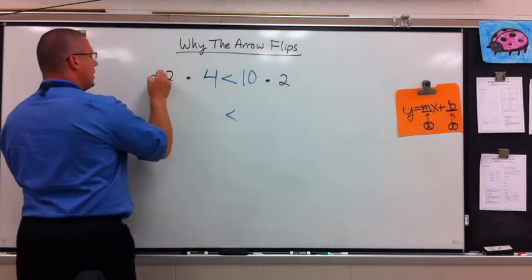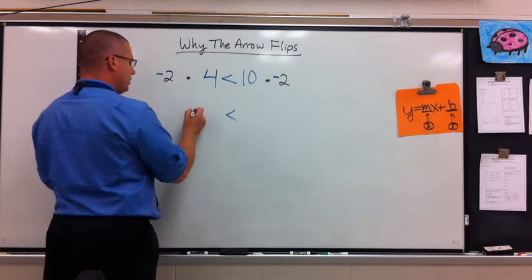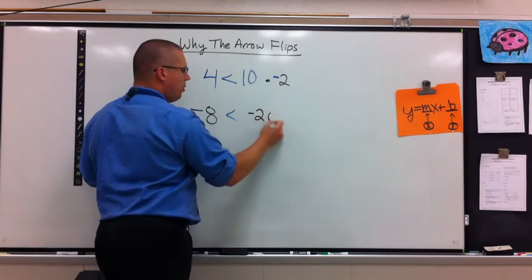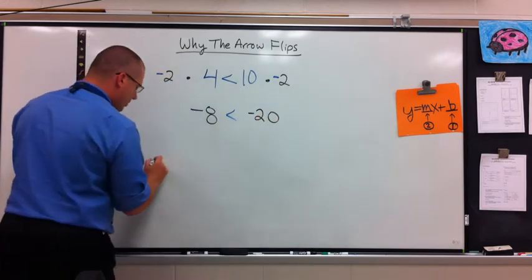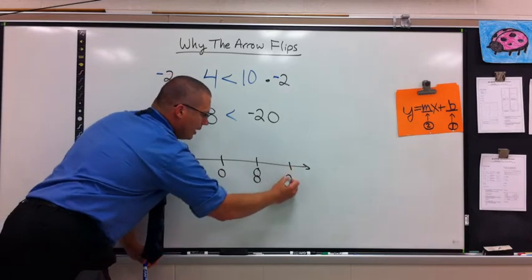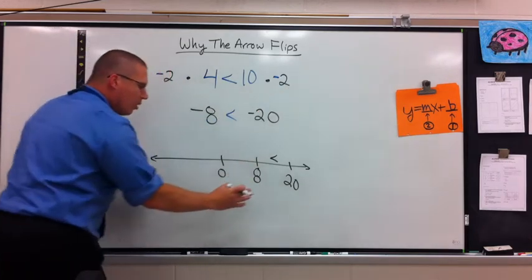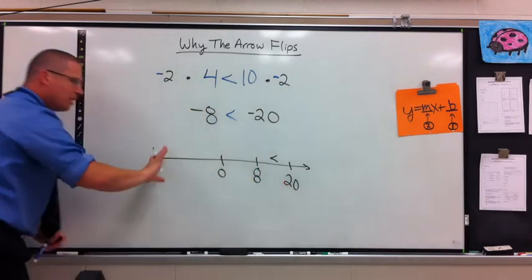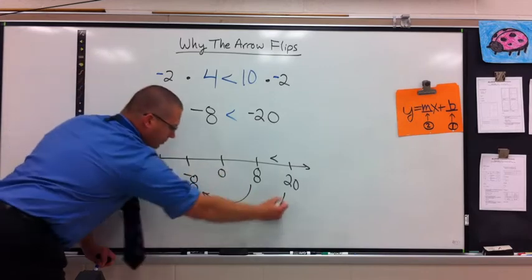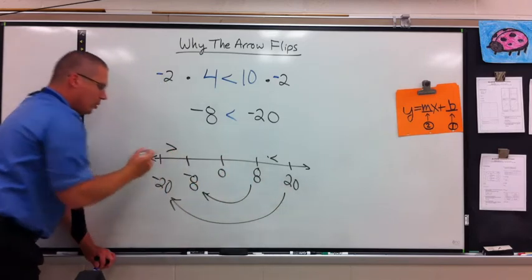Why it changes when it's negative is because of opposites. Negative 2 times 4 is negative 8, and 10 times negative 2 is negative 20. Is negative 8 less than negative 20? The answer is it's not. On a number line — here's 0, here's 8, here's 20 — 8 was less than 20. But as soon as I multiply by a negative number, it takes these numbers and flips them over. So here is negative 8 and here is negative 20. It flips them, so my arrow used to point that way, but because I flipped the order of the numbers, my arrow now points the other way.